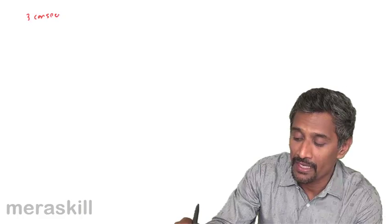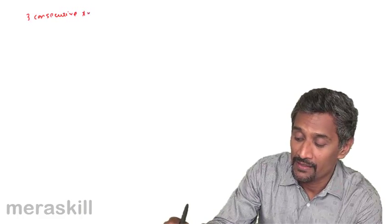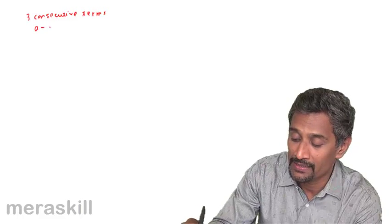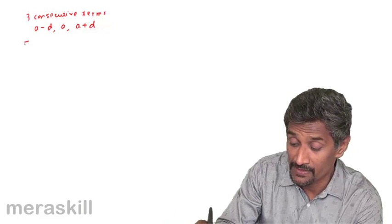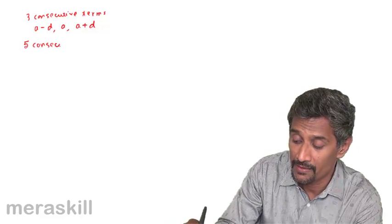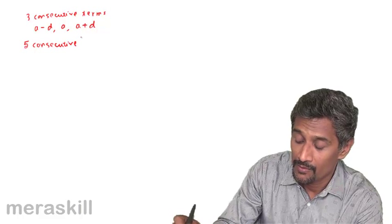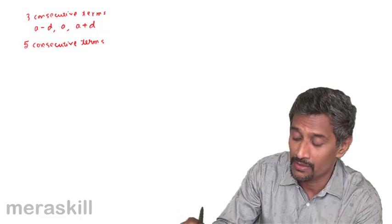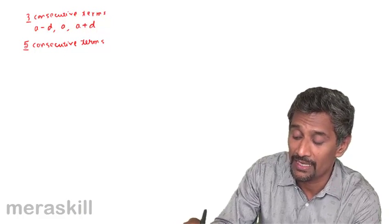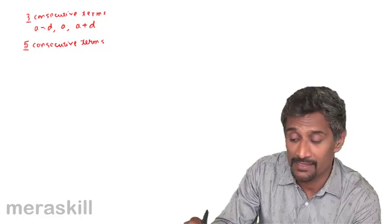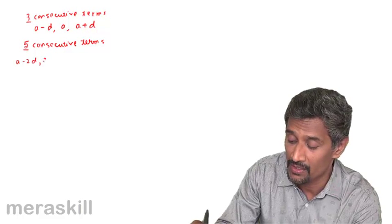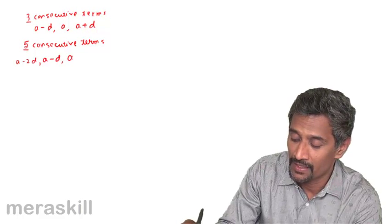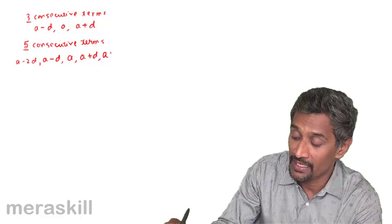Suppose three consecutive terms of an AP have to be taken, then we take them as A minus D, A, A plus D. If it is five consecutive terms of an AP, what do we take them? Whenever it is an odd number, five or three consecutive terms, we just have to keep the difference as D. So we move one ahead before this, which is going to be D less: A minus 2D, A minus D, then A, A plus D, and then A plus 2D.